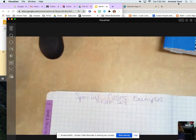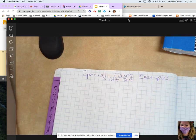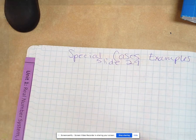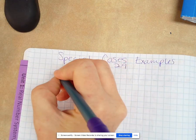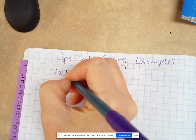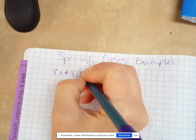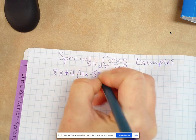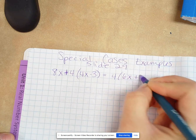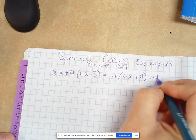Okay, so we're going to look at slide 29 just to make sure you all have the correct answers there. So we have 8x plus 4 times 4x minus 3 equals 4 times 6x plus 4 minus 4. Is that correct?